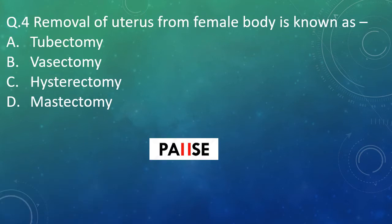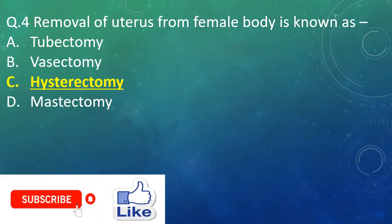Question 4: Removal of the uterus from the female body is known as? Option A: tubectomy. Option B: vasectomy. Option C: hysterectomy. Option D: mastectomy. And the right answer is Option C — hysterectomy.